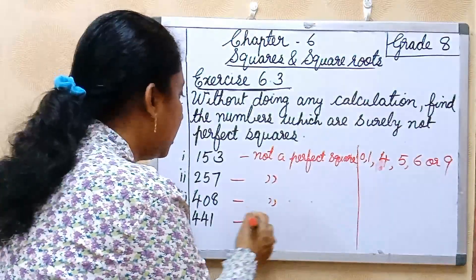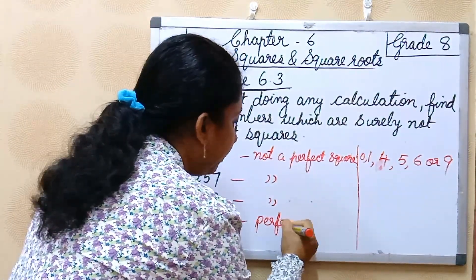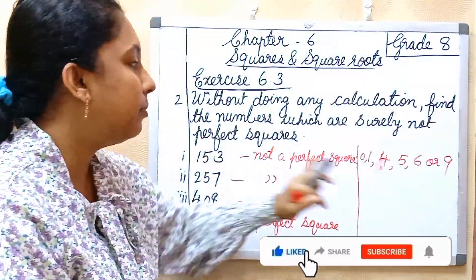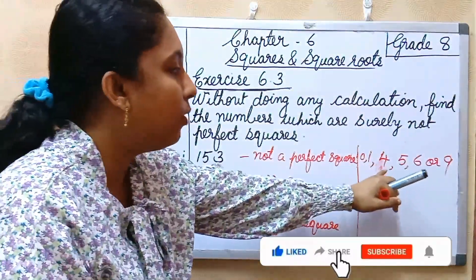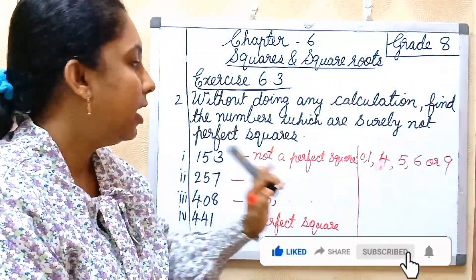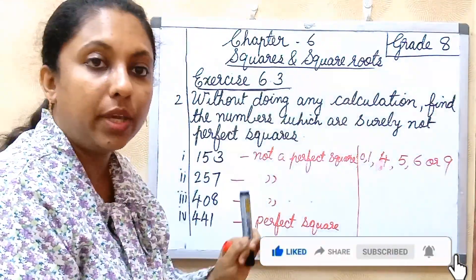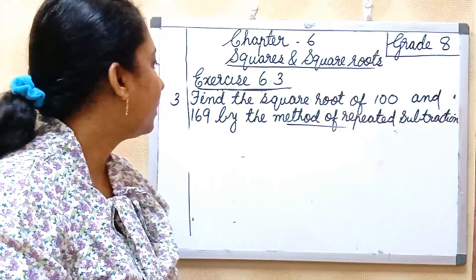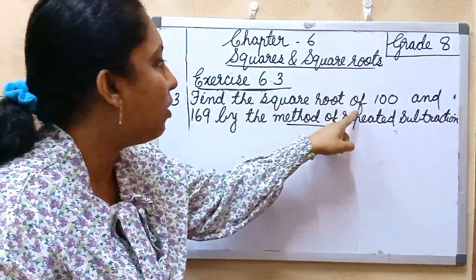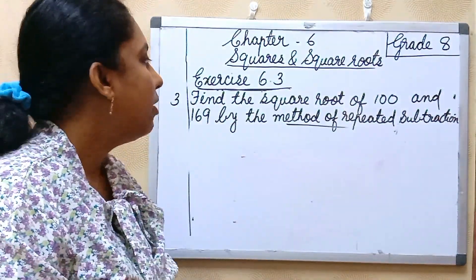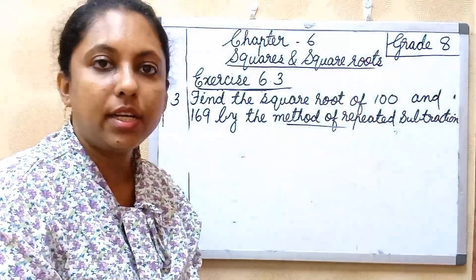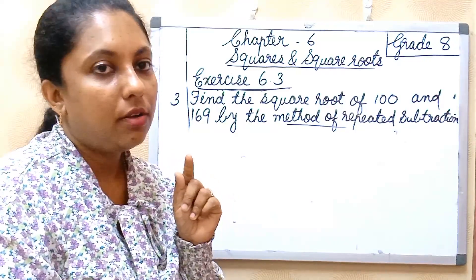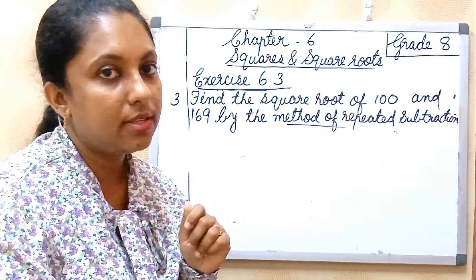So if a number is a perfect square, then the unit place will be 0, 1, 4, 5, 6, or 9, and one more thing, remember 0 should be even also. Third question: find the square root of 100 and 169 by the method of repeated subtraction. We discussed already, do you remember? The sum of first n odd natural numbers is n square.